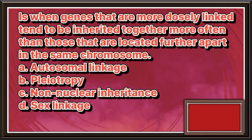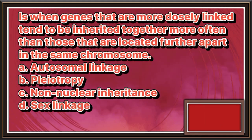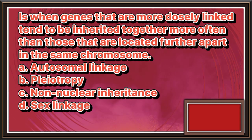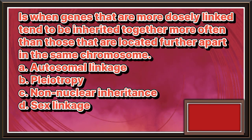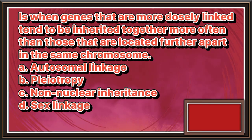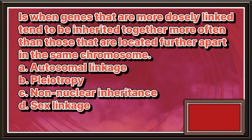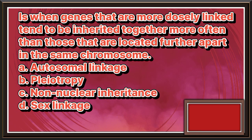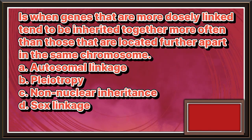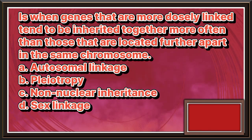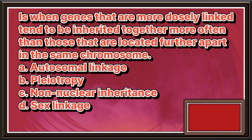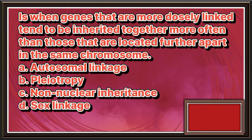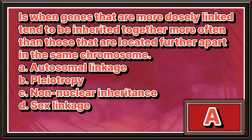This is when genes that are more closely linked tend to be inherited together more often than those that are located further apart in the same chromosome. a. Autosomal linkage. b. Pliotropy. c. Non-nuclear inheritance. d. Sex linkage. The answer is letter a.